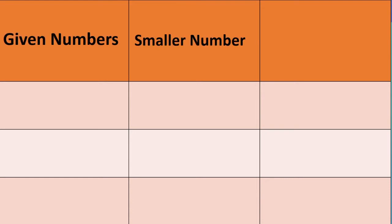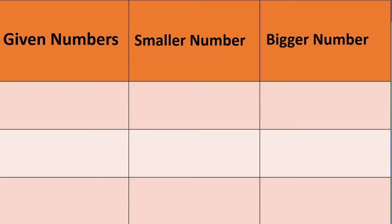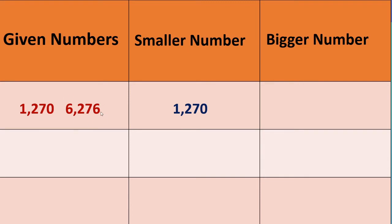Now, here we will compare numbers — deciding the smaller number and the bigger number. Numbers are given, and we have to decide which is smaller and which is bigger. Because you know the place value and how to read and write numbers. The first pair is 1270 and 6276. Here we have 1000 versus 6000, so the smaller number is 1270 and the bigger number is 6276. Next, 6589 and 5689: 6000 is bigger than 5000, so the smaller number is 5689 and the bigger one is 6589.